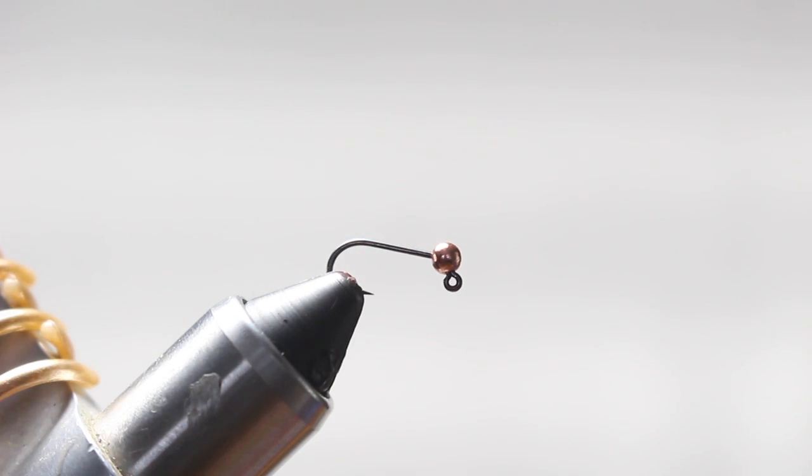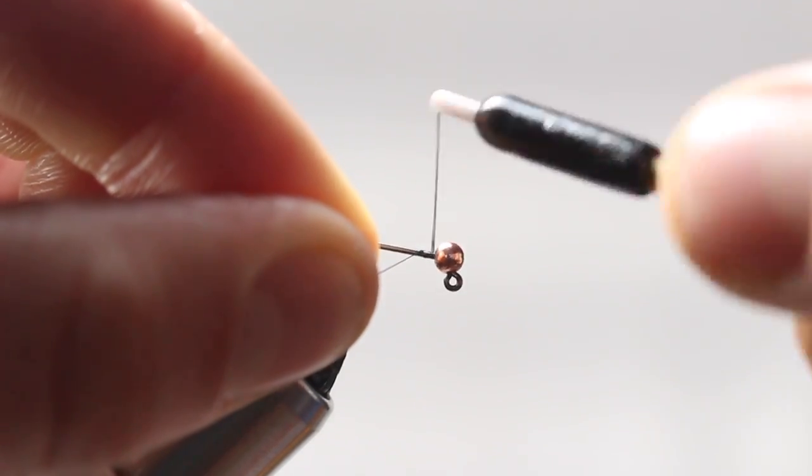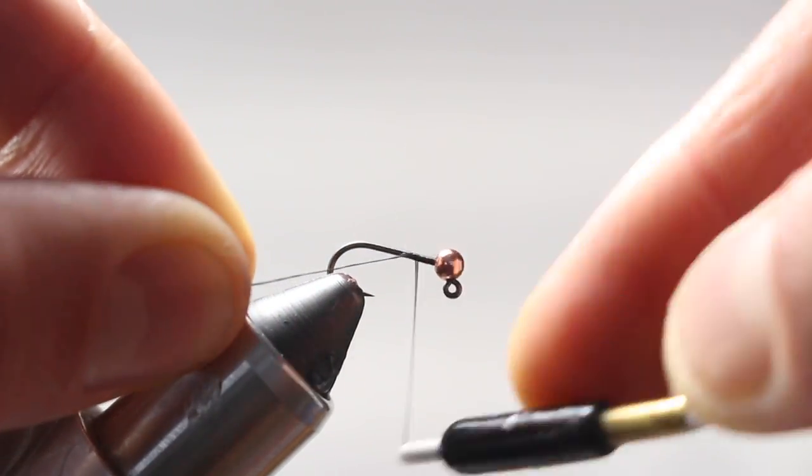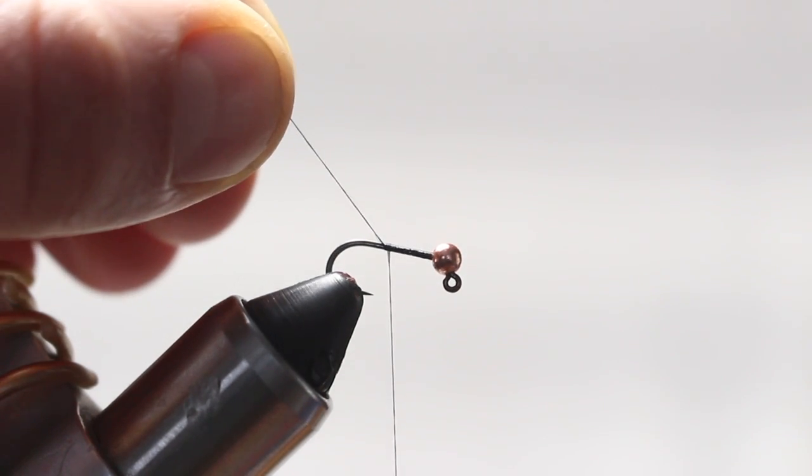I've got this on a jig hook, I believe this is a size 16 with a corresponding tungsten slotted bead. If you guys have watched some of the videos, I don't really pay attention to the size of the beads. I just buy them when I think they are the right size and throw them in a bin. I just try to match it up with how I think the fly should look.